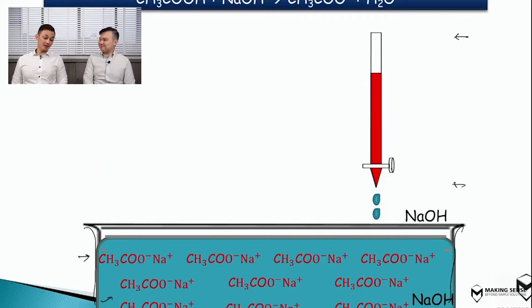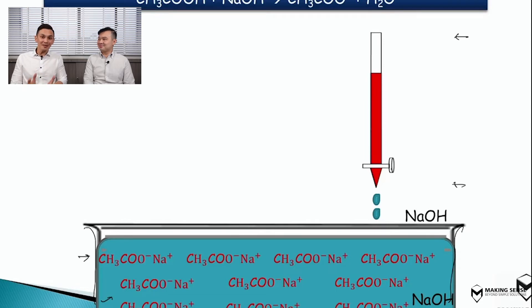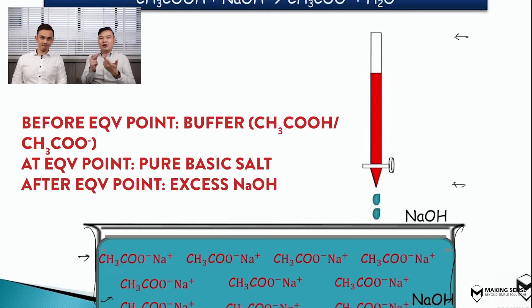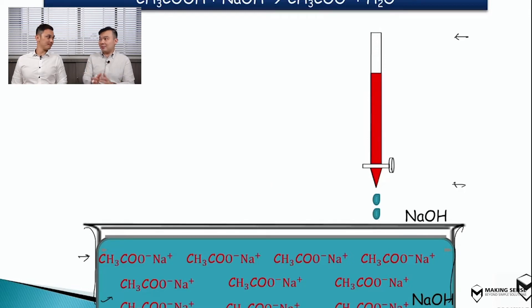Is this a buffer? Some students might mistake this as a buffer because they see two different bases as well as a salt present. But remember, a buffer must be either a weak acid or a weak base together with a salt. Right now we have NaOH — NaOH is a strong base — so this is not a buffer. In conclusion: buffer only occurs before the equivalence point. At the start, the conical flask has the weak acid; as you add NaOH, it forms a buffer solution; at the end point, only the salt remains; and if you add excess NaOH, it is simply an excess NaOH scenario — not a buffer.